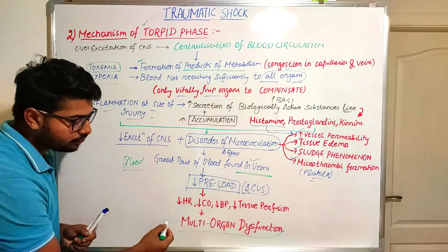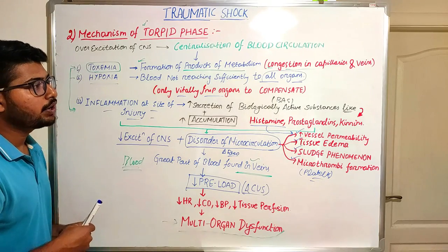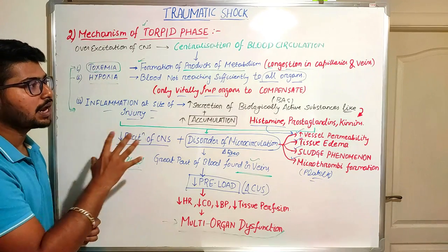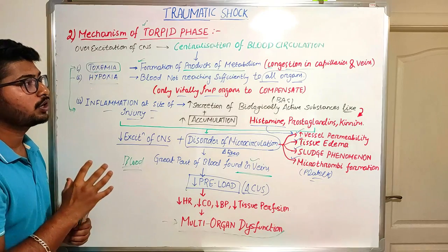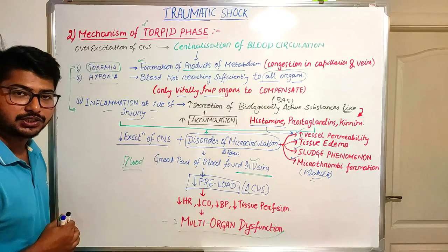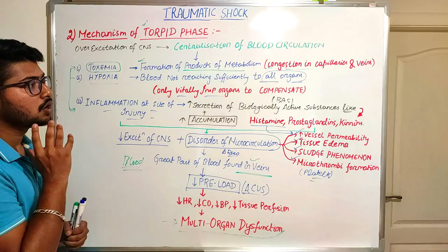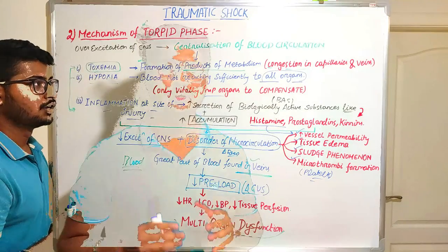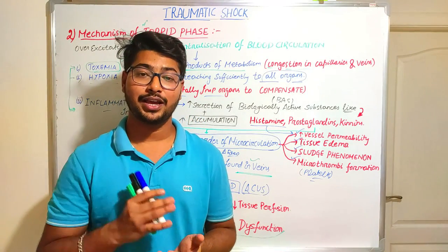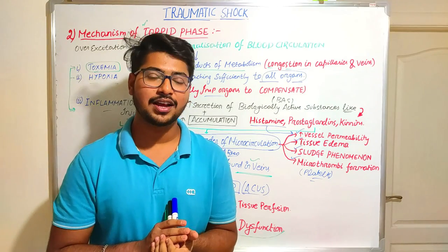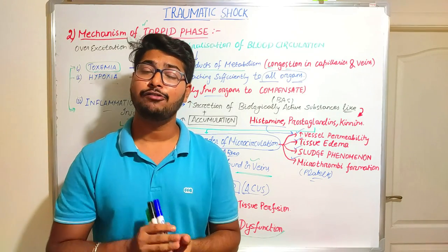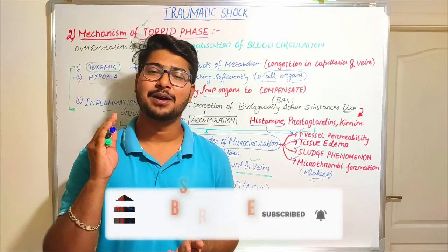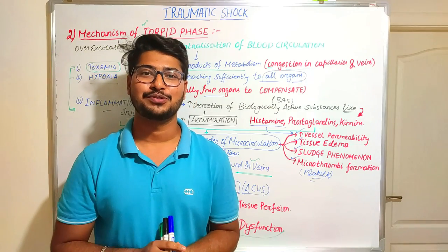This is how the torpid phase of traumatic shock concludes with multi-organ dysfunction, just as studied in other varieties of shock. It is necessary for a doctor to understand these whole mechanisms completely so we can save a patient. This was all about today's topic — the two phases of traumatic shock. I hope it was helpful. Please subscribe to my channel and support by commenting below. Thank you so much for watching.